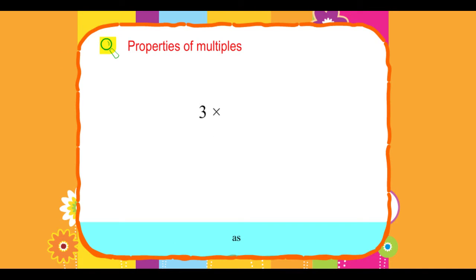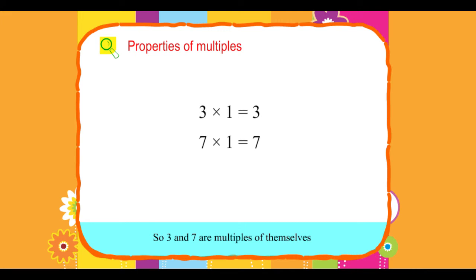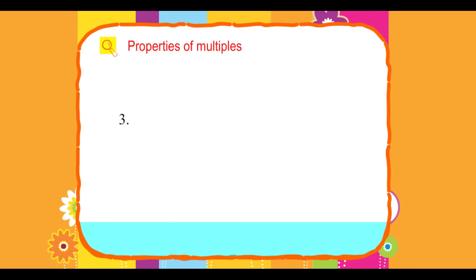As 3 into 1 equals 3, 7 into 1 equals 7. So, 3 and 7 are multiples of themselves.